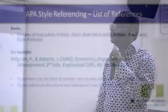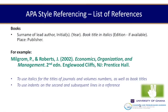To reference a book: write the surname and initials of the author, the year, the book title in italics, the edition if available, the city of publication, and the publisher. For example: Milgram, P., & Roberts, M.J. (2002). Economics Organization Management. Second edition. Englewood Cliffs, New Jersey: Prentice Hall. The second line is indented.